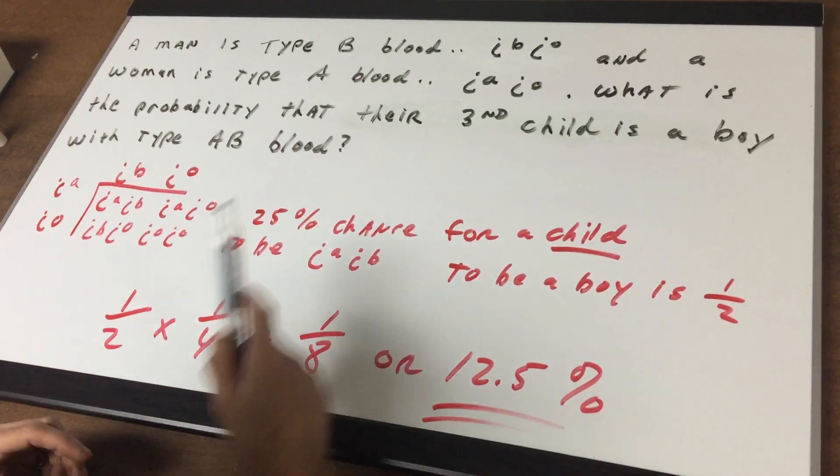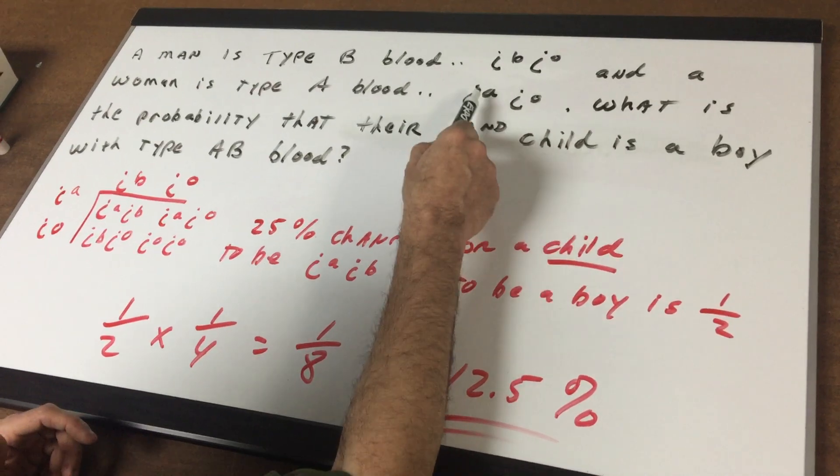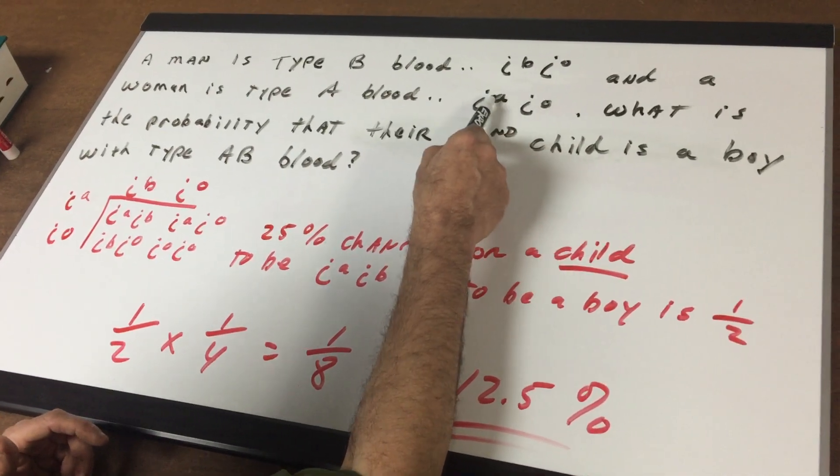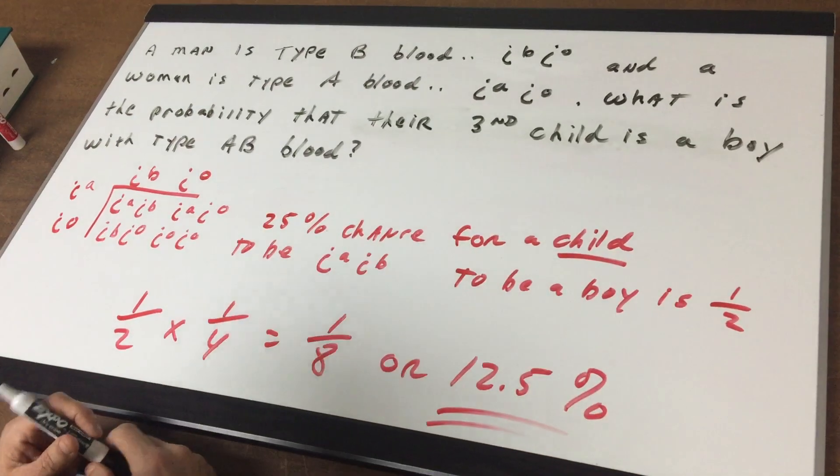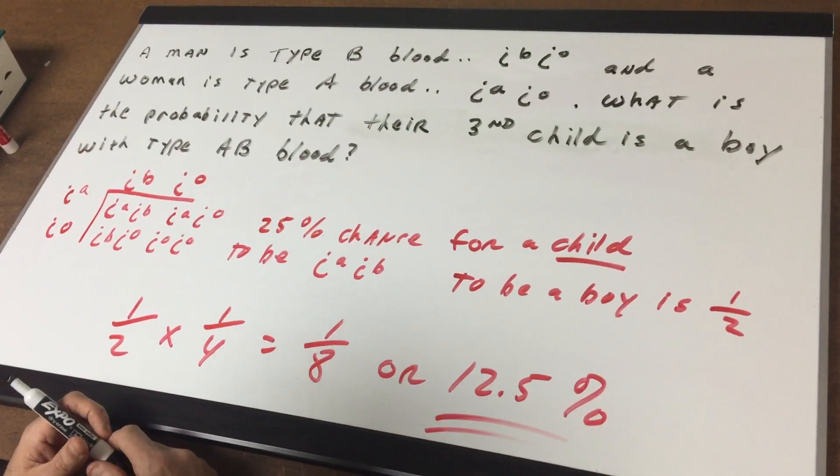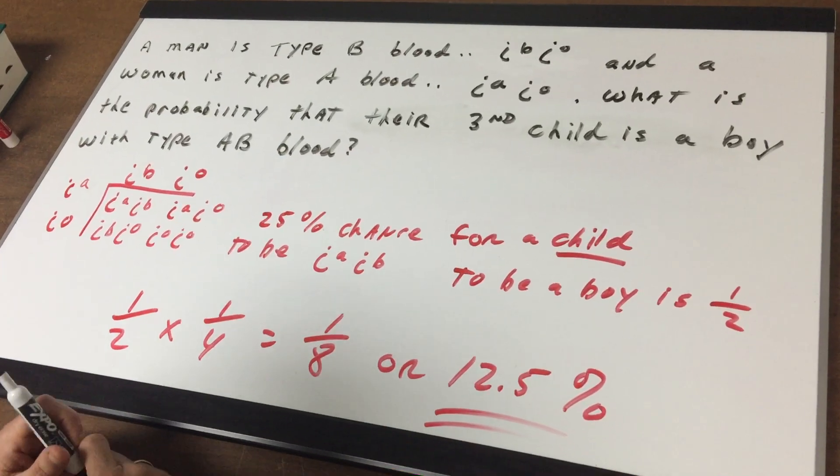So type A blood can be either written in the heterozygous form or homozygous if it was the same allele and you would write IA IA. Now, what is the probability that their third child is a boy with type AB blood?